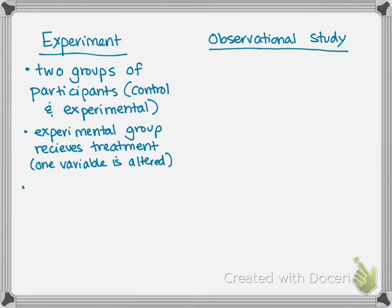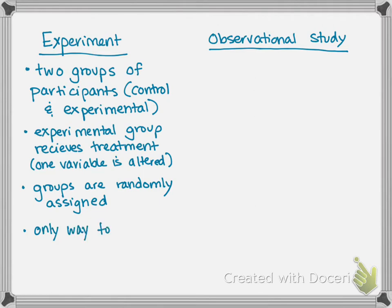The one other requirement for an experiment to be an experiment is that the groups are randomly assigned. It is required that there is random assignment into the control or experimental group for something to be considered a true experiment. Why would we conduct an experiment? We would conduct an experiment because this is the only way — the only way — to show a cause and effect relationship.